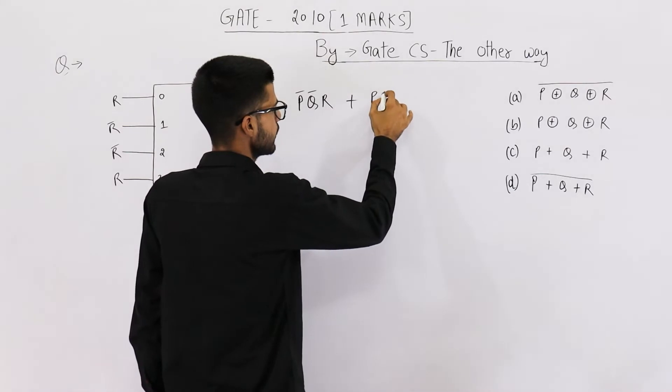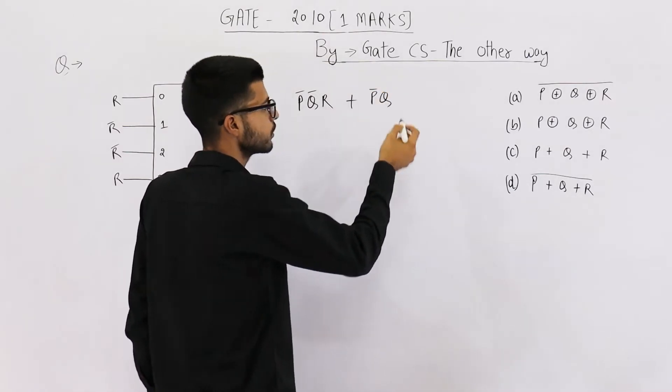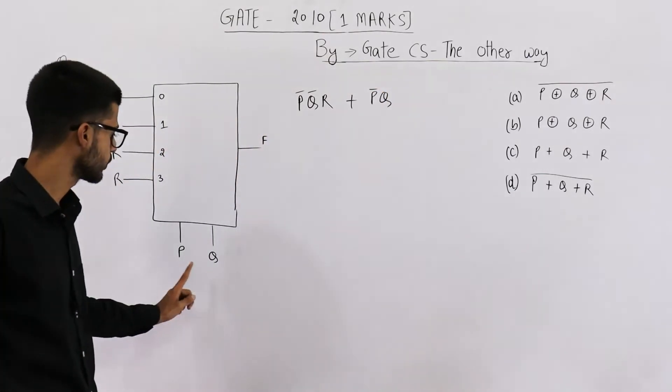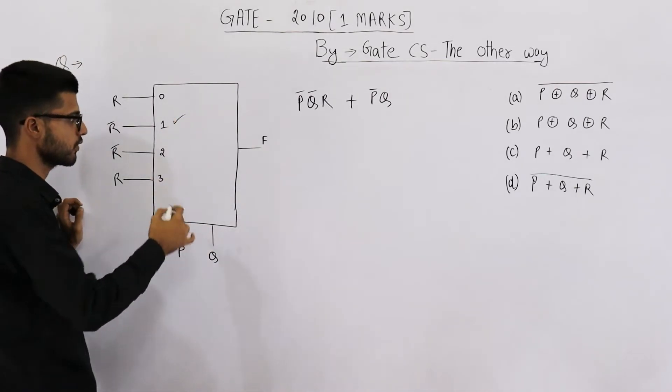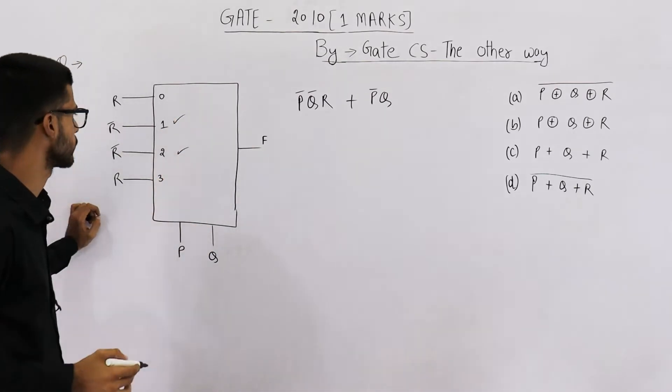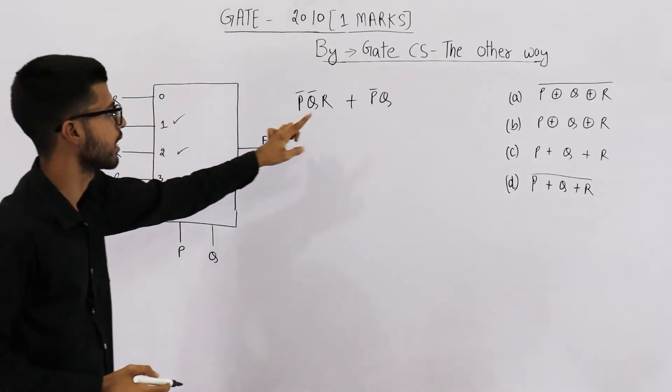Second case is when p is zero, q is one. In this case, this one will be the output. In case of one zero, this one will be the output, so let's write r bar.